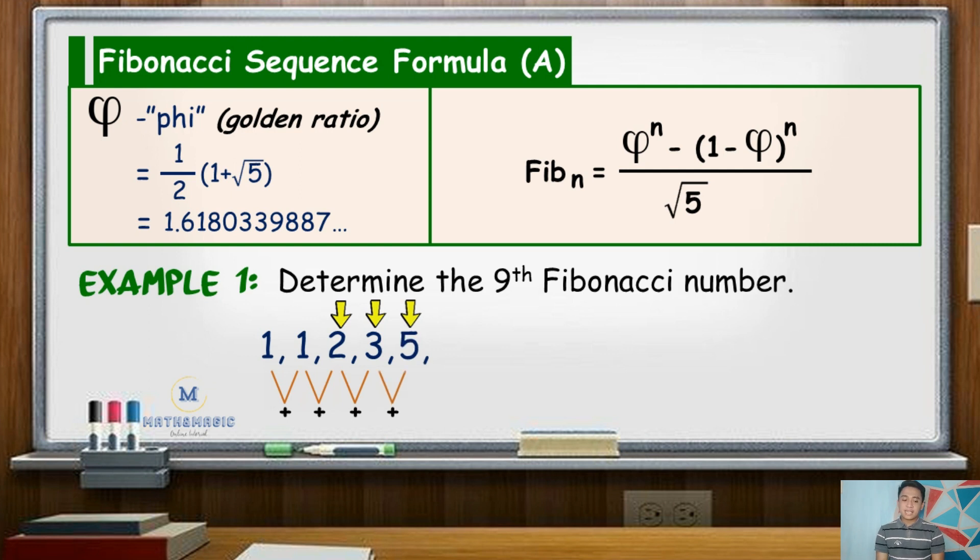Continuing this process, the seventh and eighth terms are 13 and 21 respectively. Adding them, the sum is 34. Thus, the ninth term is 34.